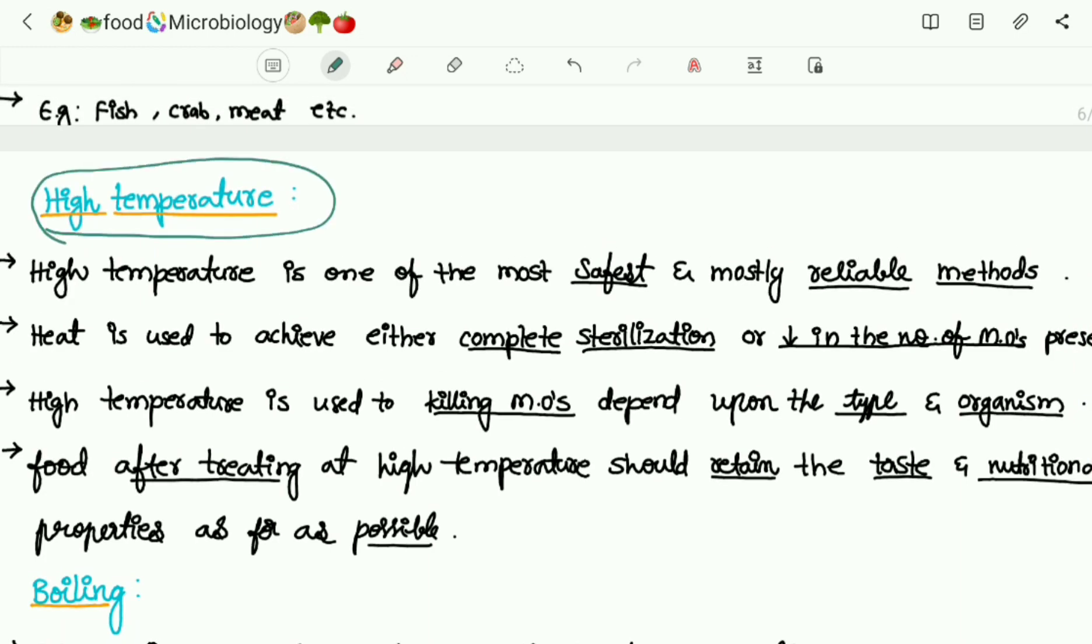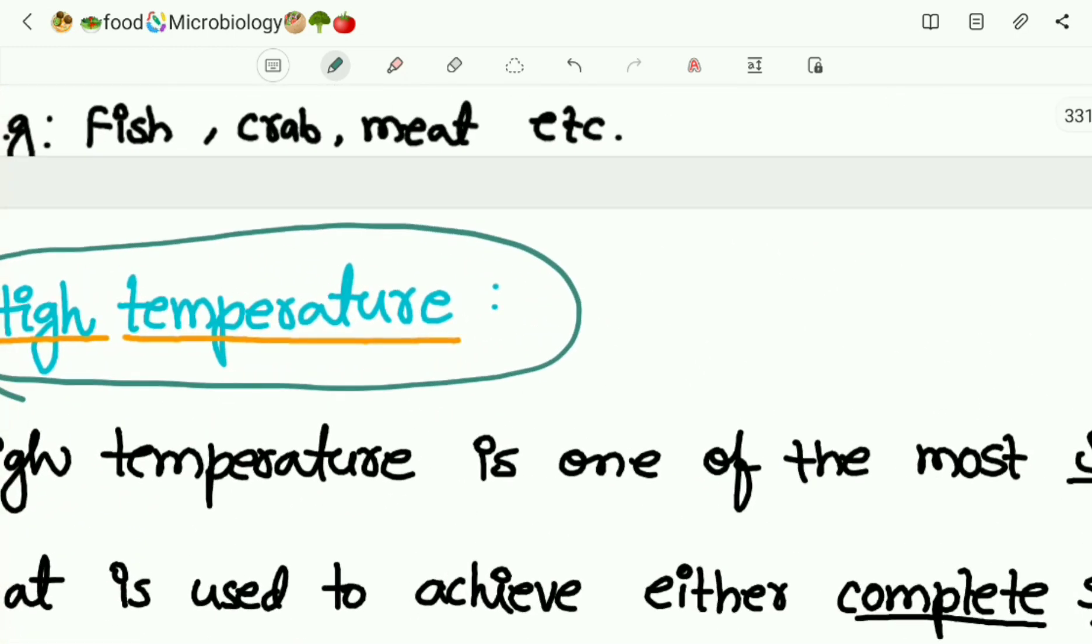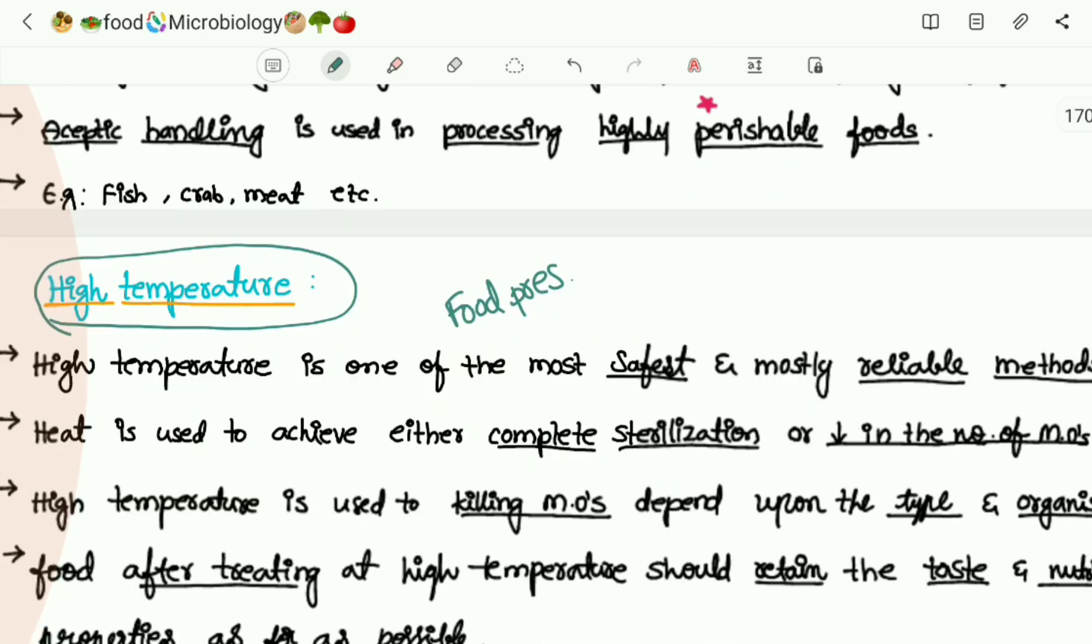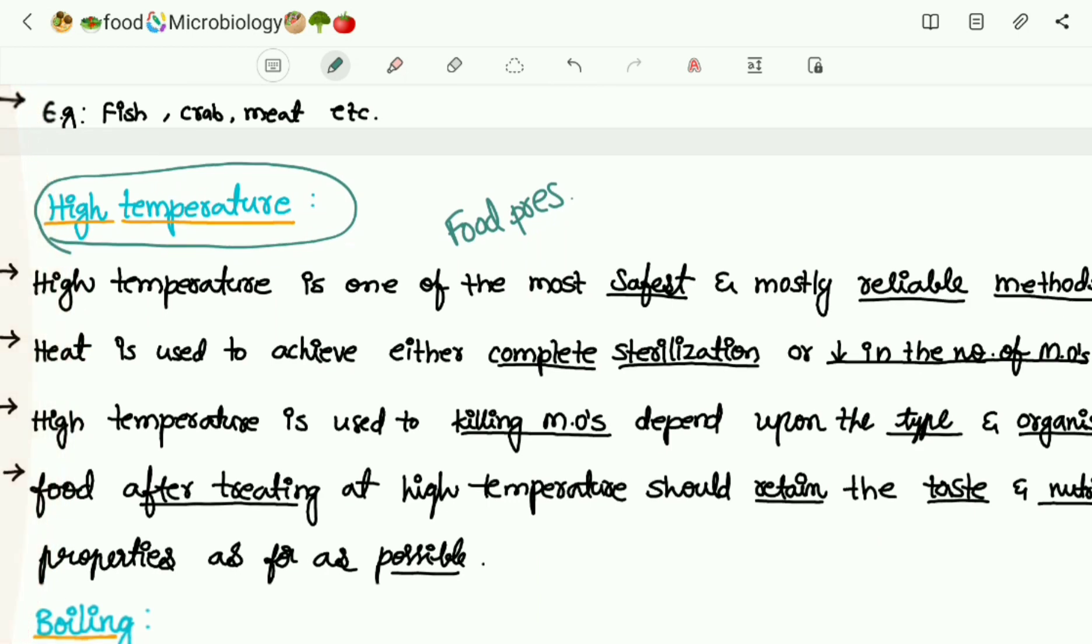High temperature is a food preservation method. High temperature is one of the most safest and mostly reliable methods. This is the advantage, and there are cons also which we will see.